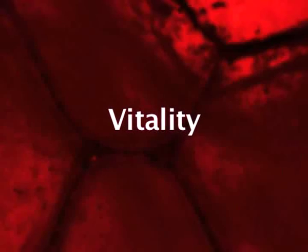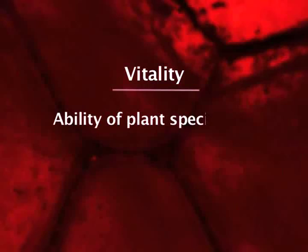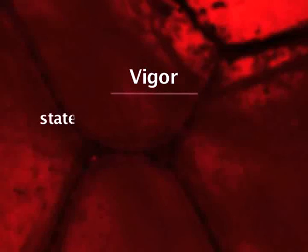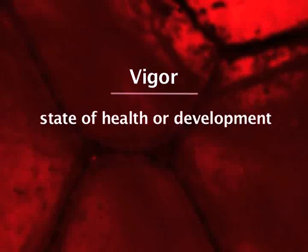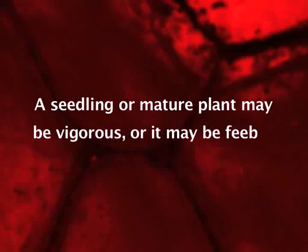Fourth is vitality. Vitality is the ability of a plant species to complete its life cycle in the prevailing conditions of the community. Vigour refers more specifically to the state of health or development within a certain stage. A seedling or mature plant may be vigorous, or it may be feeble and poorly developed.